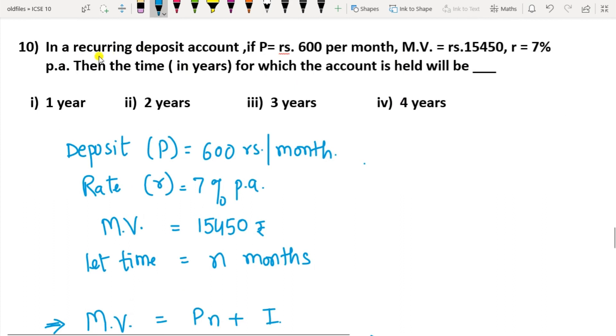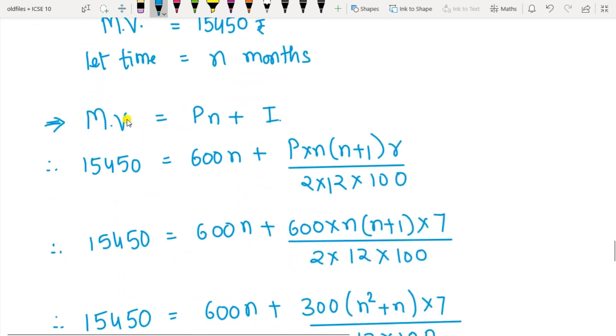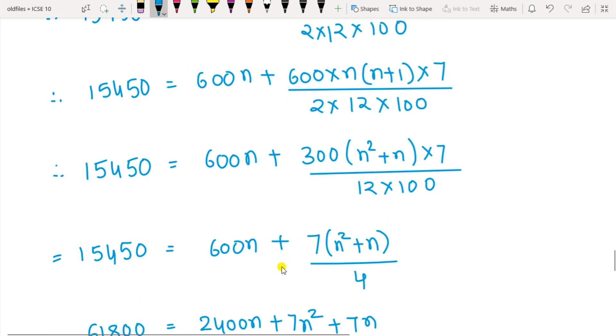Question 10: In a recurring deposit account, if P (deposit per month) is Rs. 600, maturity value is Rs. 15,450, and rate of interest is 7% per annum, then the time in years for which the account is to be held is. So P is Rs. 600 per month, R is 7%, maturity value is Rs. 15,450. Let us consider time as n months. Write the formula for maturity value: Pn + I. Substitute all the values of the variables. You want to find n.